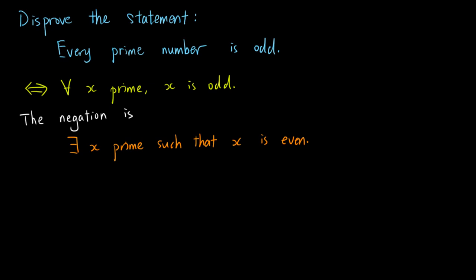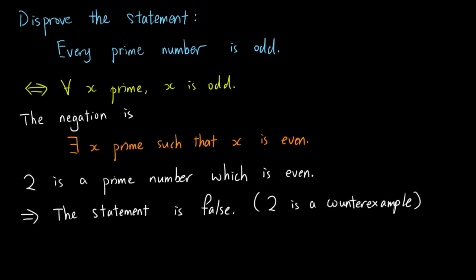And in fact, there is only one such x. It is 2. 2 is prime, and it is even. So we have shown that the statement is false, because 2 is a counter-example.